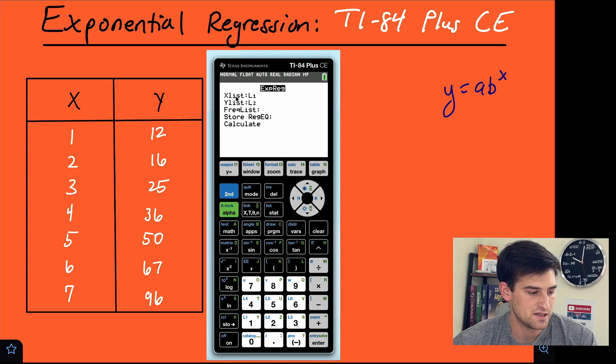And now we just want x to make sure it's L1 because that's where we typed our x values. Y list needs to be L2. That's where we typed our y values. Now we just go down here to calculate. We hit enter and it's going to give us everything we need.